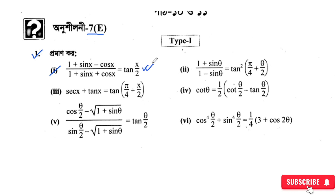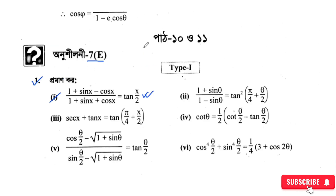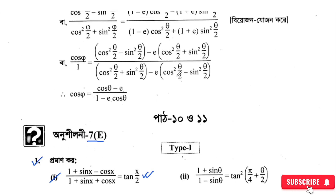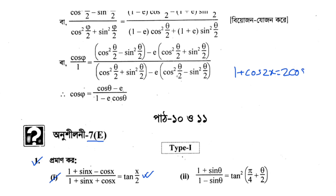For this problem, we need some formulas. Normally we use: 1 plus sin 2x, 1 minus sin 2x, and 1 plus cos 2x. These are the standard formulas we know. Now what are the 1 minus cos formulas? Let me think. So 1 plus cos 2x — the formula for this is 2 cos squared x.